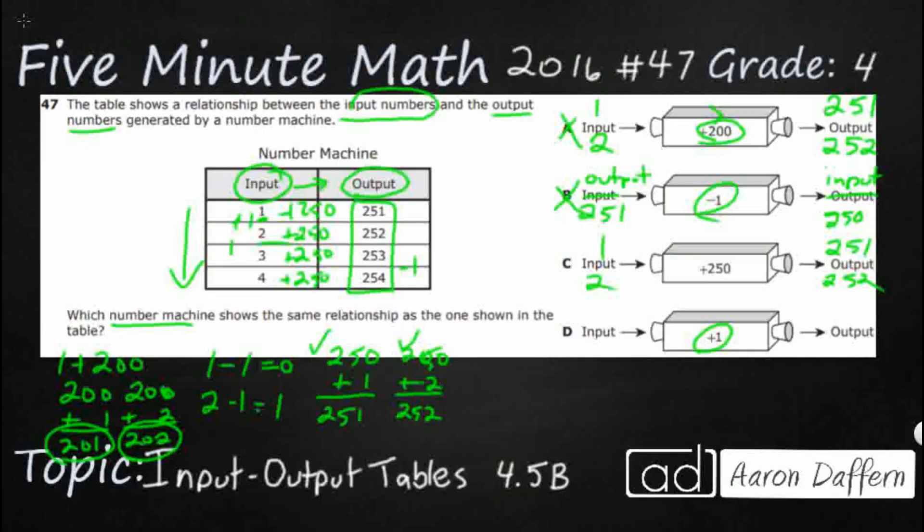But once again, that doesn't work because on our input-output, we need to go side to side because our input and output is side to side. So, we're supposed to put input 1 and get 251, and that doesn't work. So, our answer here is going to be C, plus 250.